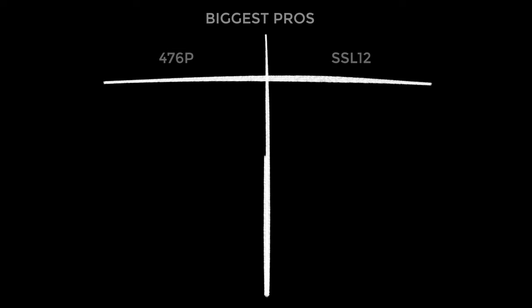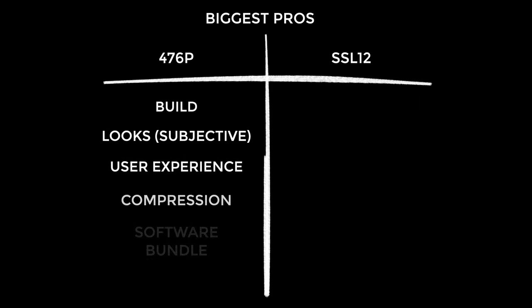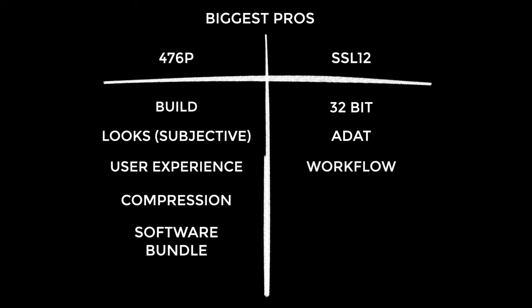Starting with the biggest pros: for the 476P, I would say the biggest pros are the build quality, the aesthetic, the way it's inspiring to use, the user experience, and that compression does sound good. The software bundle you get with it is also pretty great. The biggest pros for the SSL12: that 32-bit recording is such a big feature for this unit, you get expandable inputs using the ADAT port which cannot be underestimated, and I love the workflow — it's so logical, makes so much sense, and really just gets out of your way whilst you want to create.